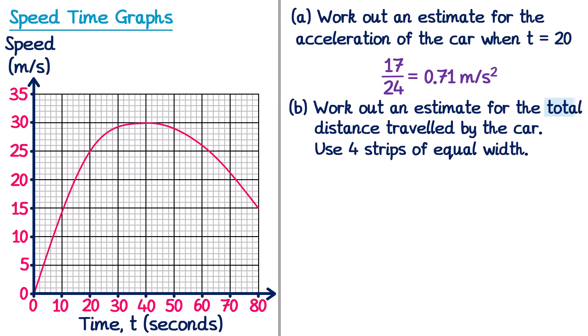In part B we work out the total distance travelled by the car — that's the area underneath the curve. Because the graph is a curve rather than straight lines we can't find this area accurately. Instead the question says to use four strips of equal width. The time goes from 0 to 80 seconds, so each strip is 20 seconds wide. We draw vertical lines every 20 seconds, then connect the tops with straight lines to form a purple shape whose area approximates the area under the curve — which is why this is also an estimate.